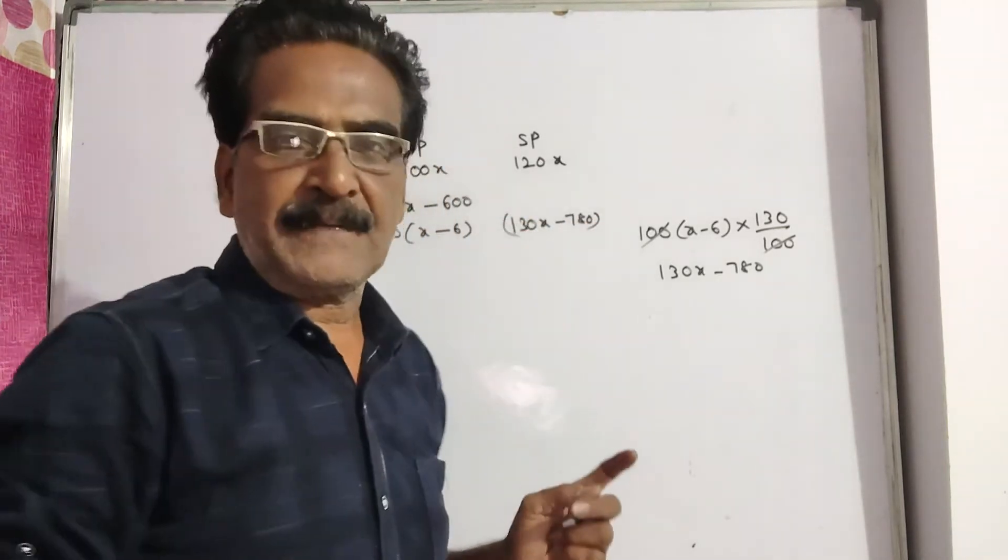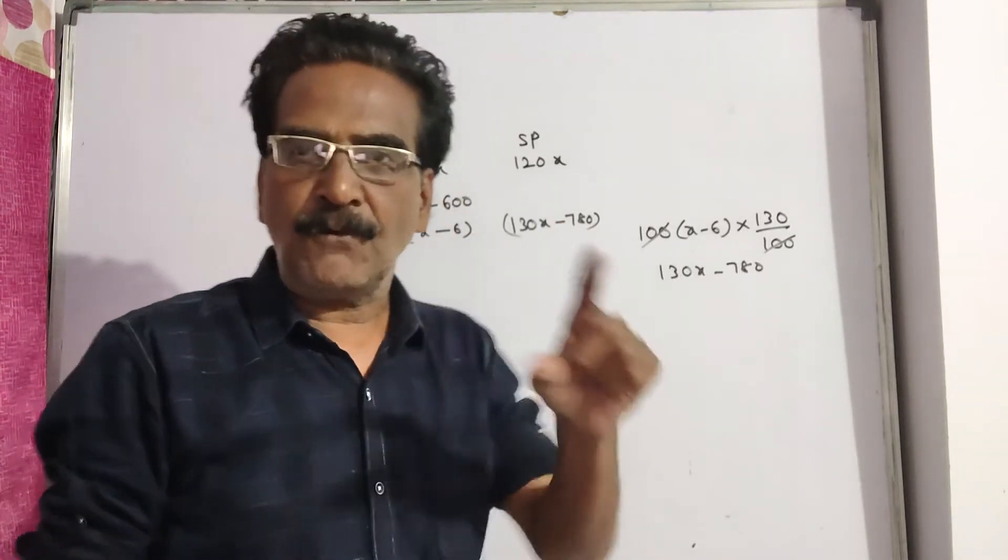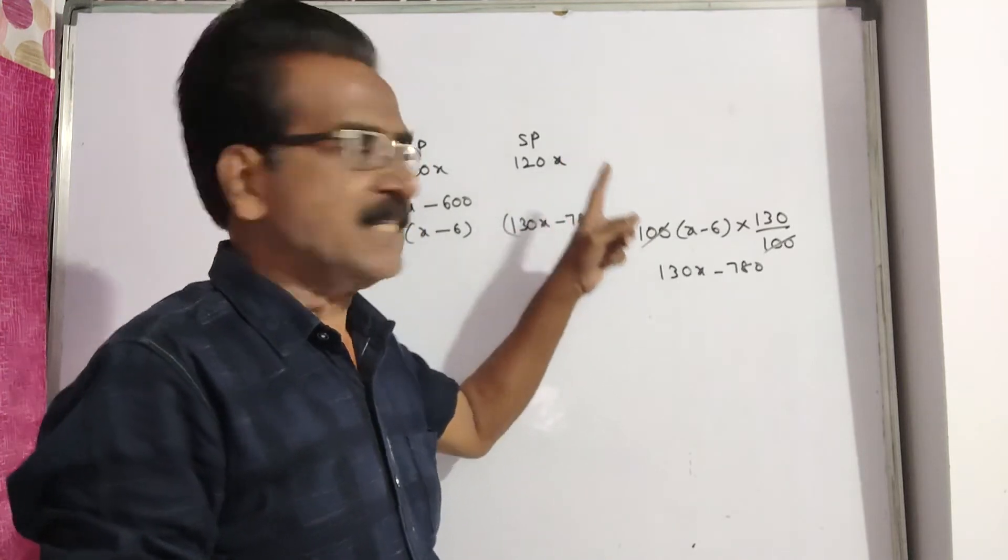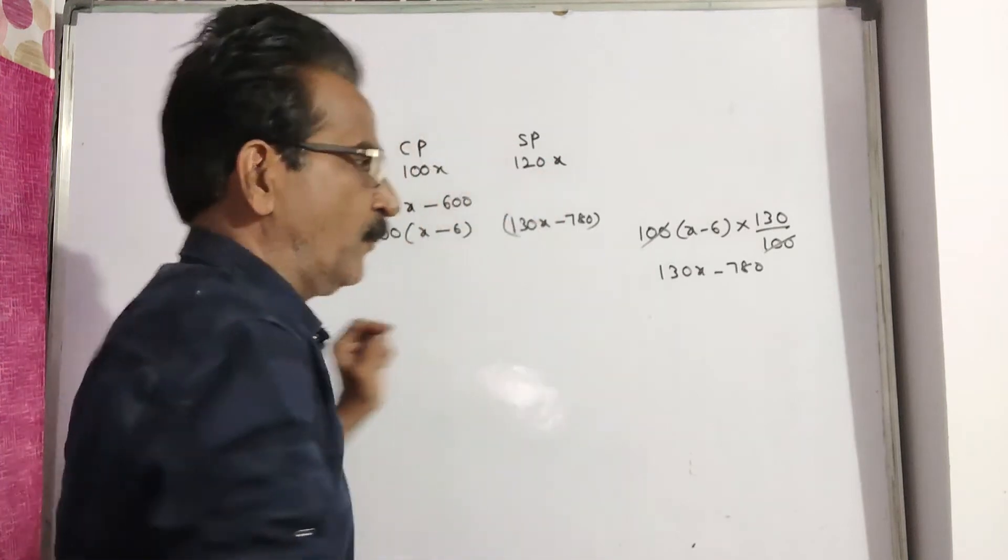This is new sold price. Now, it is given that this new sold price is 400 rupees less than the earlier sold price. That means the difference between this new sold price is 400.